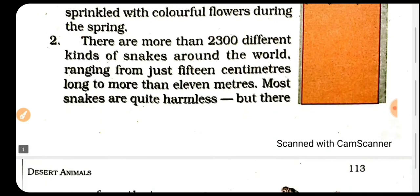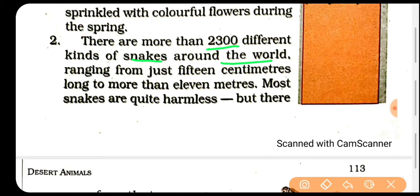There are more than two thousand three hundred different kinds of snakes. Ab different insects ki baat karenge — kaun kaun jo hai woh deserts mein zyada paaya jaata hai. Snakes jo poore world mein hain — lagbhag two thousand three hundred different species hain snakes ki. Ranging from just fifteen centimeters — sabse chhota snake jo hai fifteen centimeter ka hota hai — aur sabse zyada lamba snake jo hota hai woh eleven meters ka hota hai.